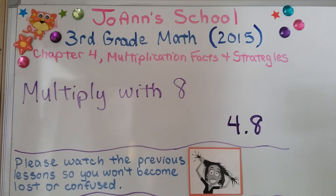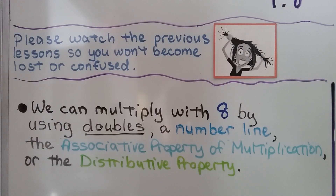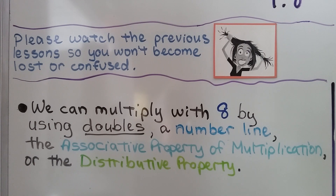Lesson 4.8: Multiply with 8. We can multiply with 8 by using doubles. Because 8 is an even number, we can use a number line, the associative property of multiplication, or the distributive property.